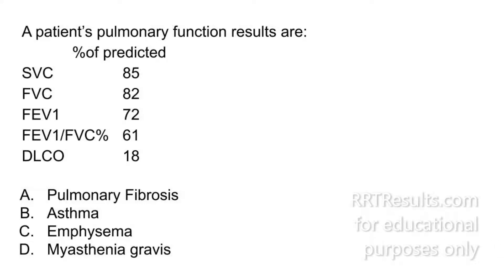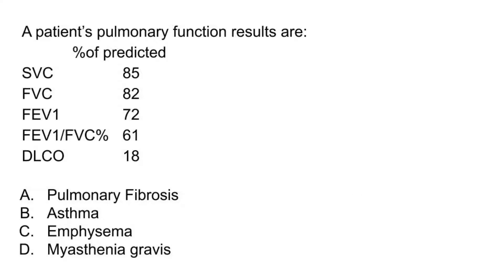Today we will be looking at a patient's pulmonary function results and determining their condition. Their SVC is 85% of predicted, their FVC is 82% of predicted, their FEV1 is 72% of predicted, their FEV1-FVC ratio is 61% of predicted, and their DLCO is 18.